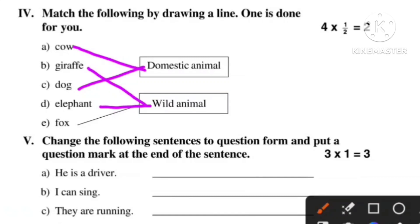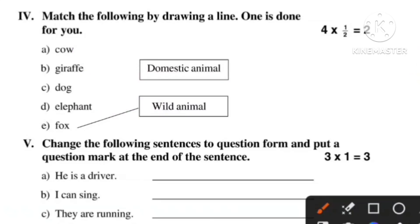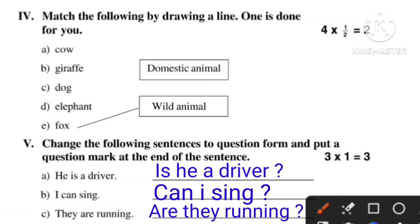Question 5: Change the following sentences to question form and put a question mark at the end of the sentence. A: Is he a driver? B: Can I sing? C: Are they running?